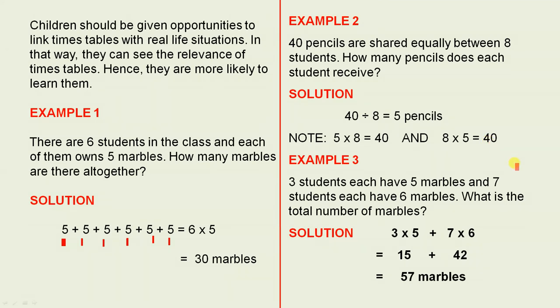Example 3. 3 students each have 5 marbles, and 7 students each have 6 marbles. What is the total number of marbles? 3 times 5 plus 7 times 6. 3 fives are 15. 7 sixes are 42. 42 plus 15 is 57. So there are 57 marbles in total.